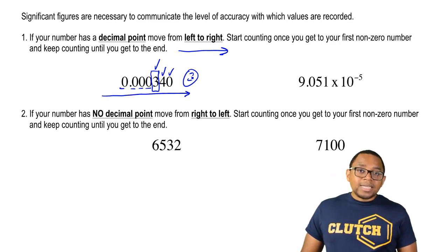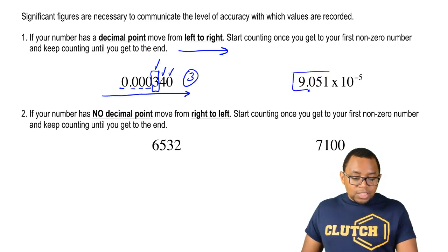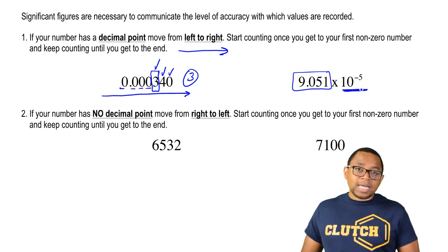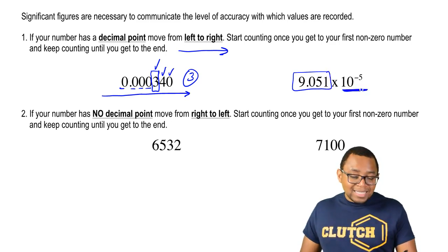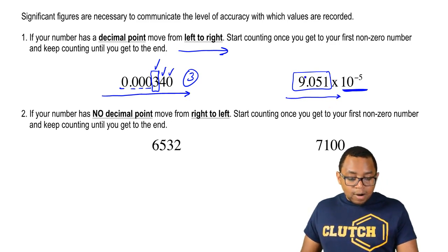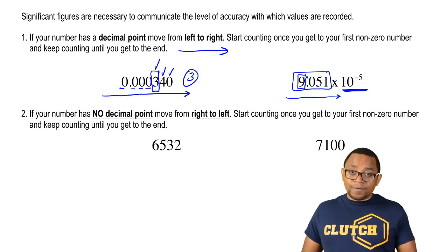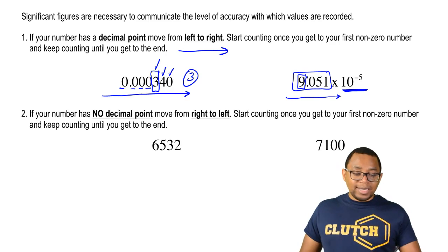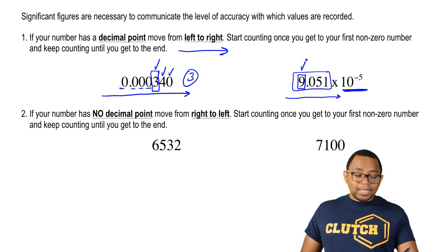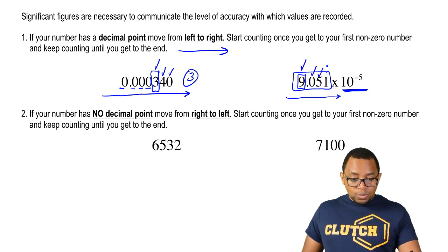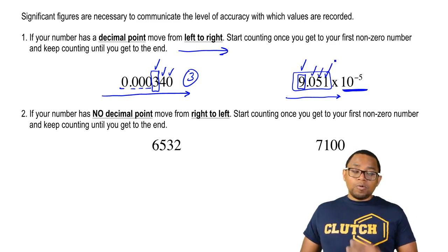For the next one, it's written in scientific notation. Remember, we don't need to pay attention to the exponent portion of the scientific notation. Again, it has a decimal, so move left to right. Our first non-zero number is actually the first number, which is nine, so you start counting and then count all the way to the end — one, two, three, four will be the number of sig figs.